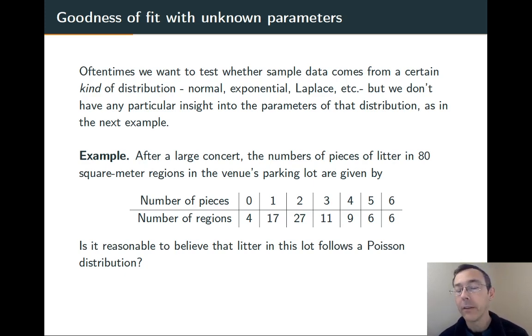So I've made a table here with the number of pieces of litter as the independent variable, the explanatory variable, and then the number of regions as the response variable. Is it reasonable to believe that the litter in the lot follows a Poisson distribution?